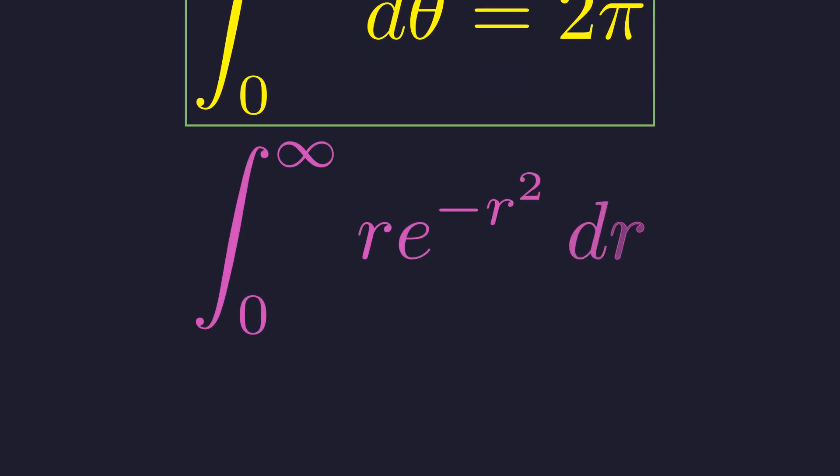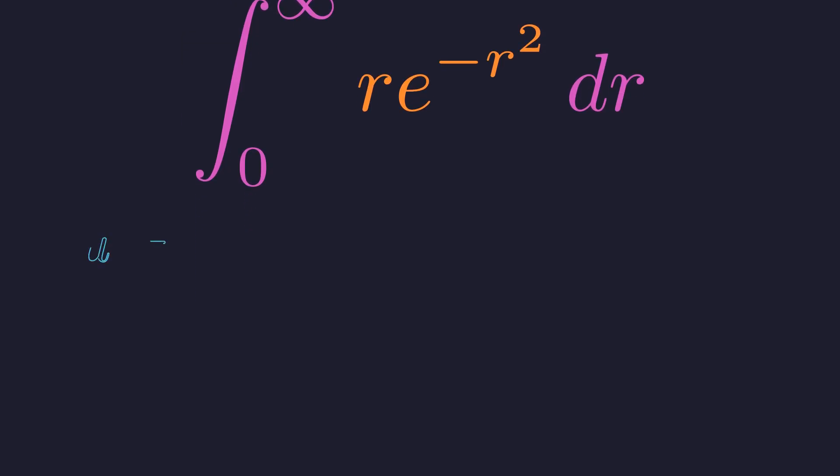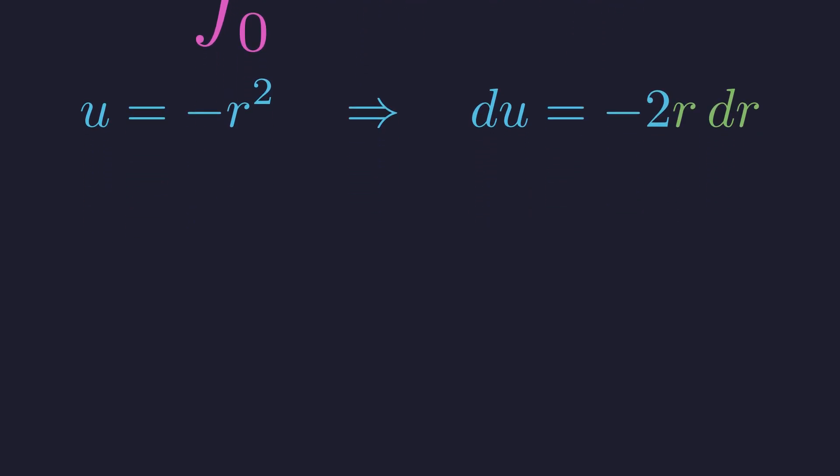Now for the r integral. This is perfect for substitution. Let u equal negative r squared. So u equals negative r squared, which means the differential is negative 2r. This means r times the differential of r equals negative 1 half times the differential of u. Perfect. That's exactly what we need.